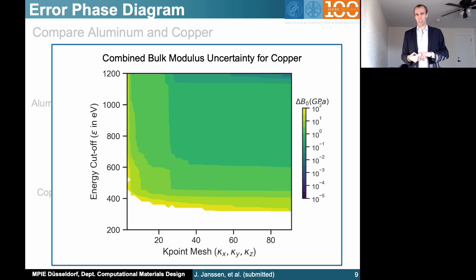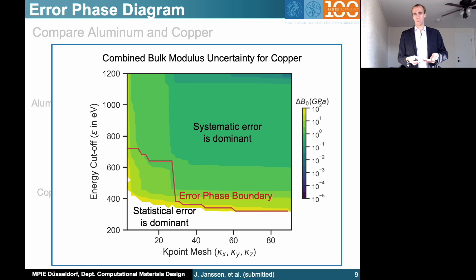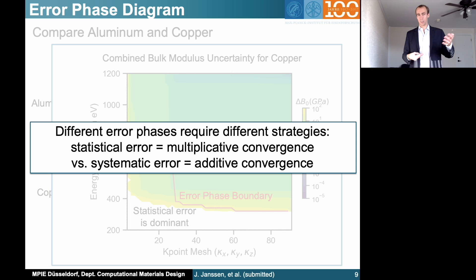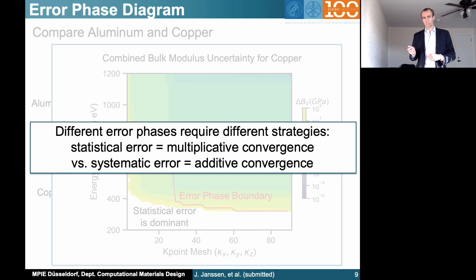In this error phase diagram, the red line denotes the error phase boundary — where the statistical error and the systematic error are exactly equal. If we go to lower convergence parameters, the statistical error becomes more dominant; if we go to higher convergence parameters, the systematic error becomes more dominant. This differentiation is really important because the statistical error, given the multiplicative convergence as shown before, can be improved by changing either the energy cutoff or the k-point mesh. For the systematic error, I always have to improve both convergence parameters together, because it's an additive convergence. So the error phase diagram shows what kind of strategy I can use to achieve a given convergence goal in a certain region of my parameter space.